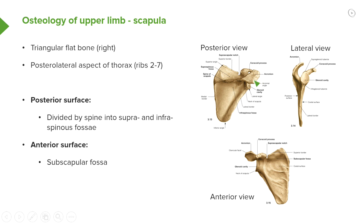This prominent ridge is known as the spine of the scapula. We can see it dilates into this large structure known as the acromion. The spine separates the posterior surface of the scapula into a supraspinous fossa — above the spine — and an infraspinous fossa. These fossae are important in offering muscle attachments that work on the shoulder joint.